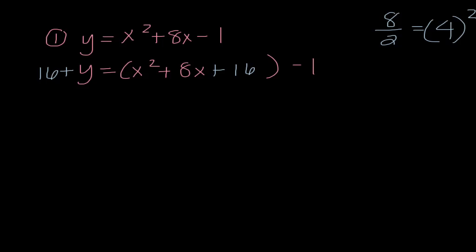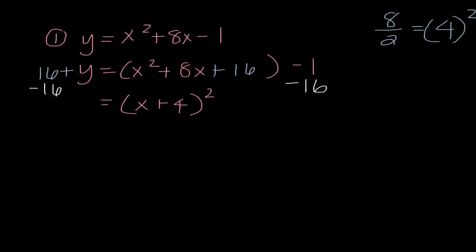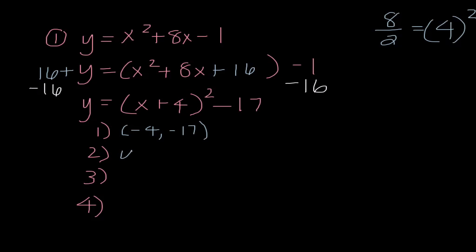Now we factor the perfect square trinomial. This should be x plus 4 squared — 4 works because 4 times 4 is 16, and 4 plus 4 is 8. The shortcut: when we know it's a perfect square trinomial, this number is always half of the middle coefficient. To isolate y, I subtract 16 from both sides. So I get y equals the quantity x plus 4 squared minus 17. Now we find our characteristics: our vertex is negative 4, negative 17. It's going up and it's normal because our a value is 1. And the line of symmetry is x equals negative 4.